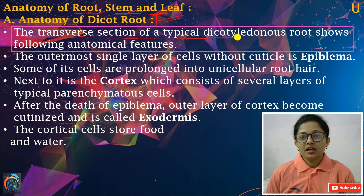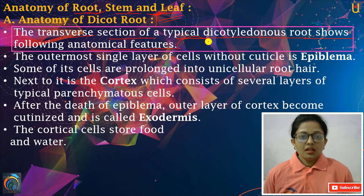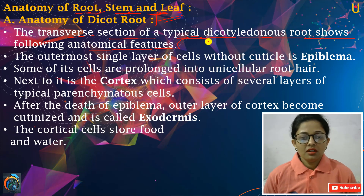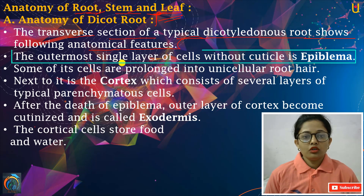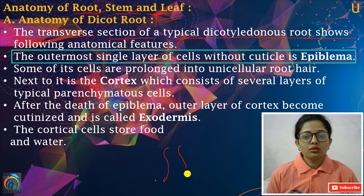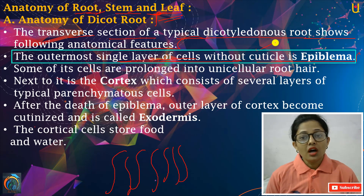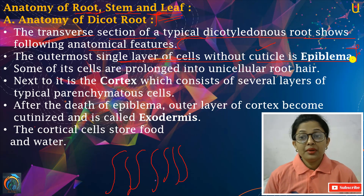The transverse section of a typical dicot root shows the following anatomical features. Bahut saare features hain jo dicot roots hoti hain. The outermost single layer of cells, without cuticle, is epiblemma. Yahan hum all over plants ki baat nahi karenge, sirf roots ki baat karenge. Only about roots. Toh, sabse pahle kya hoti hai? There is an outermost single layer of cells, without cuticle. Cuticle is the waxy substance. It is called epiblemma.